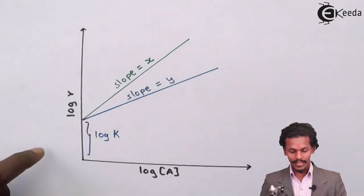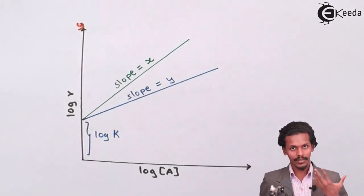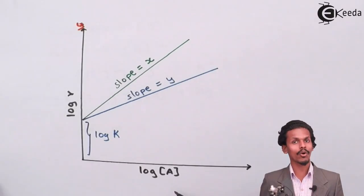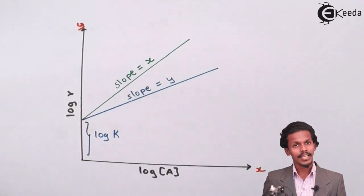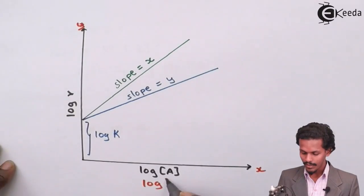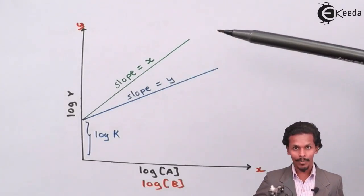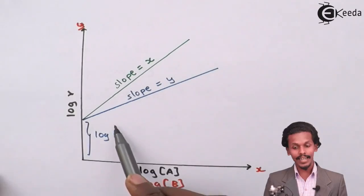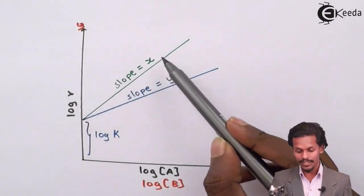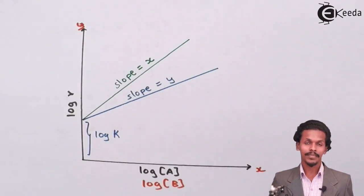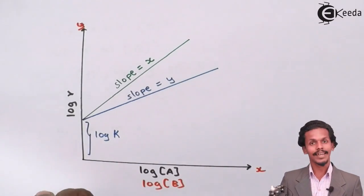On the graph, log R is on the Y-axis and either log of A or log of B is on the X-axis. When concentration of B is in excess, we plot log of A on the X-axis to determine X from the slope. When concentration of A is in excess, we plot log of B to determine Y from the slope, while the rate constant remains the same. This is how we determine X and Y using the method of initial rates.